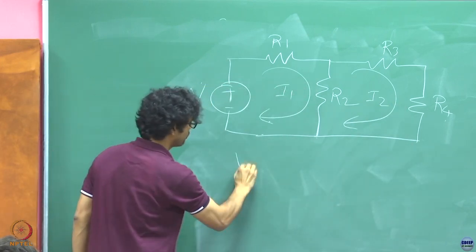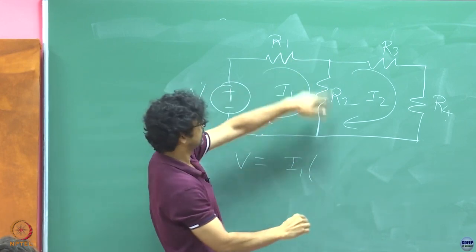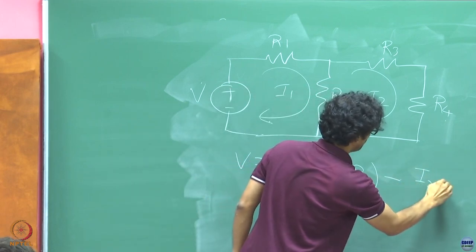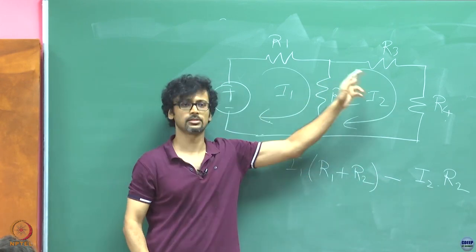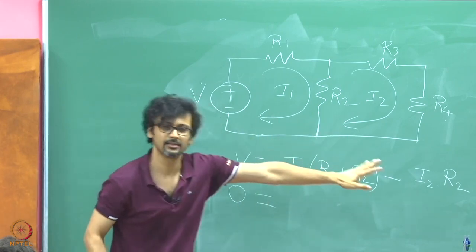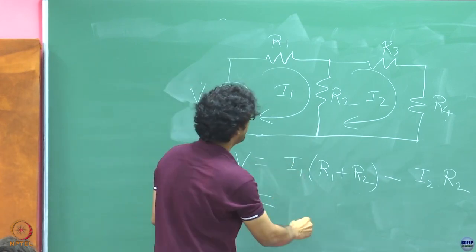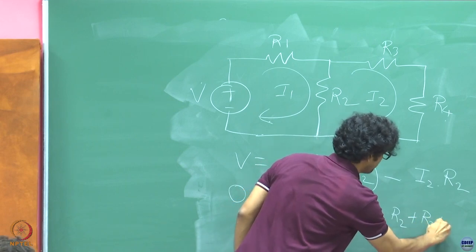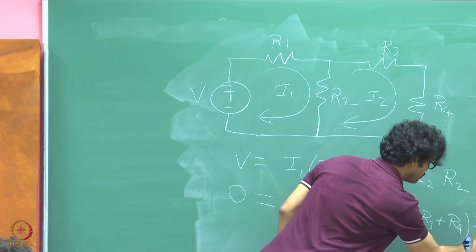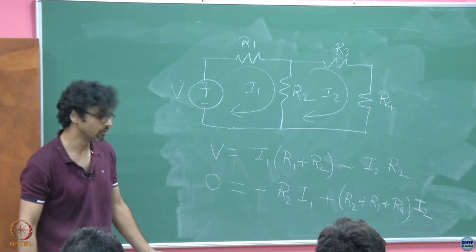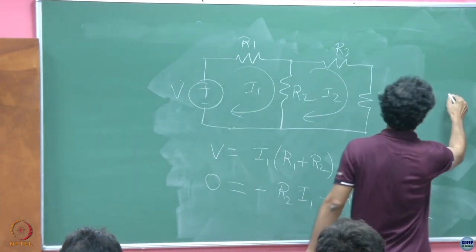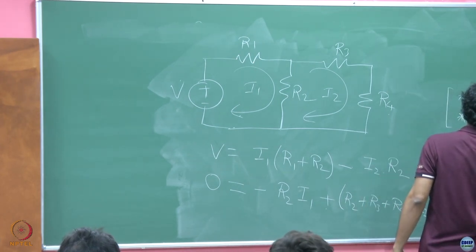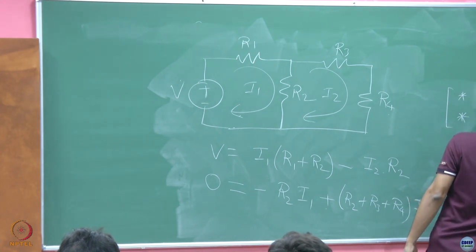Of course, you might argue just use series parallel simplifications and just solve for the current. Why go into this business? Well, I just want to illustrate to you that this lends itself to the formulation of what we call system of linear equations. So what we will call is this current as I1 and this current as I2 and this as a voltage source V. So the first equation of course then becomes, what is it, I1 with a coefficient R1 plus R2 minus I2 with a coefficient R2. And the second equation, there is no voltage source in this loop. So of course, this side you have 0. So this will have minus R2 I1 plus R2 plus R3 plus R4 I2.